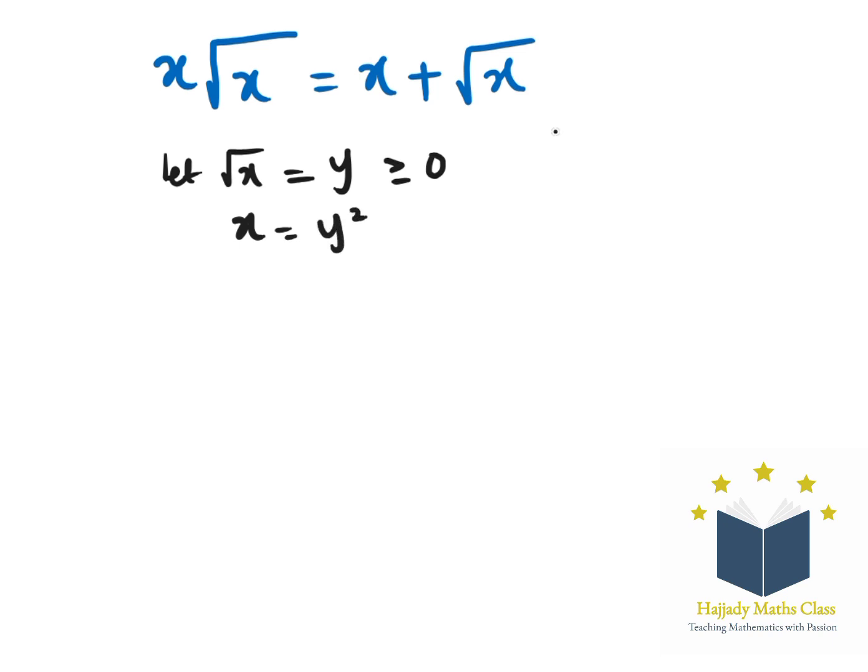Having done this, we're going to plug in the value of root x and x into the given equation. So x is y² multiplied by root x, which is y, equals x which is y² plus root x which is y.